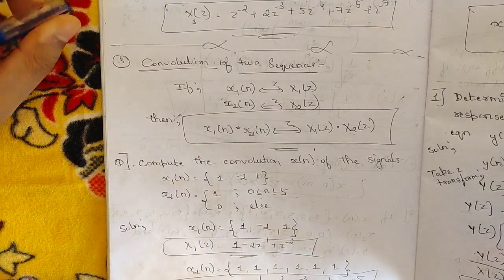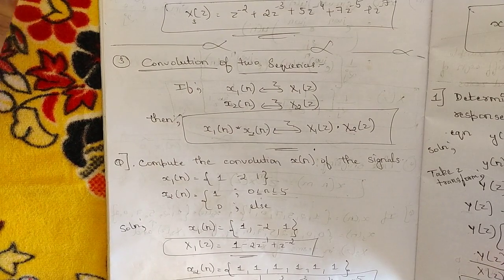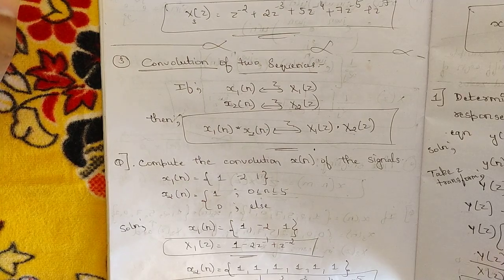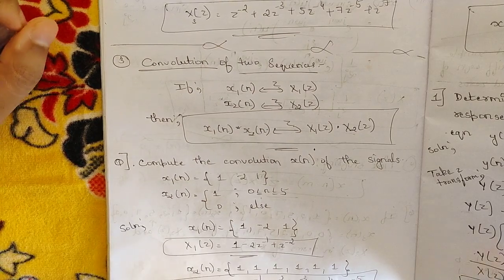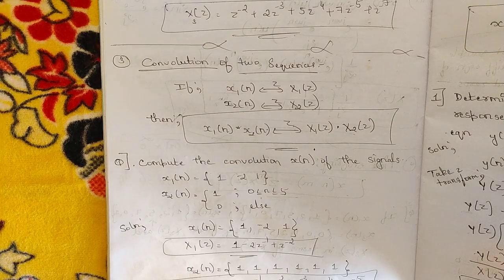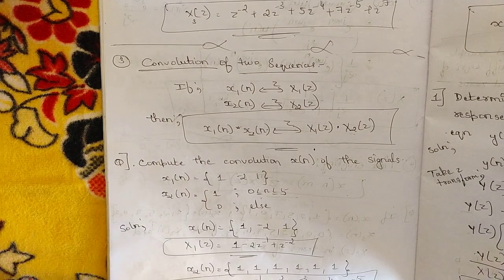Hello everyone, welcome to this new video. In the previous video we started with the Z-transform — the definition of Z-transform — and discussed briefly how to represent a sequence in the Z-plane. We also covered one property: the linearity property. In this session we have two important properties.